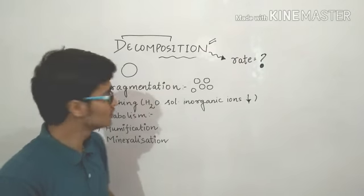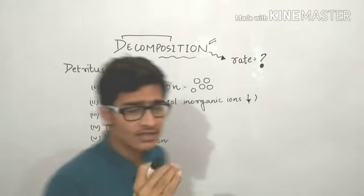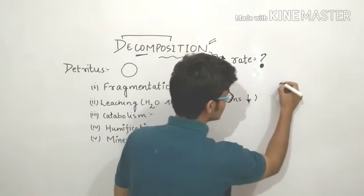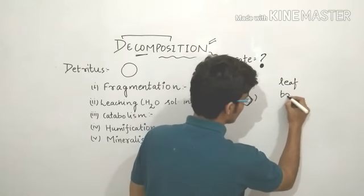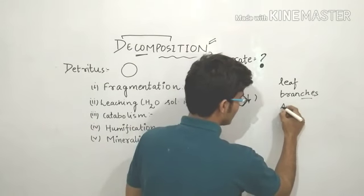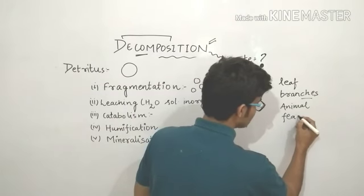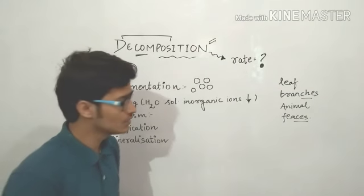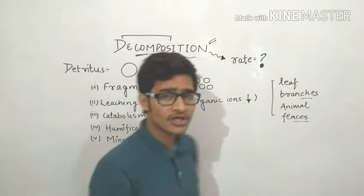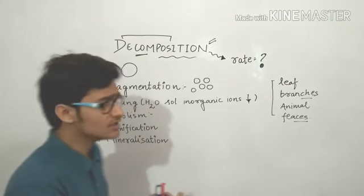The organic substance, that is the dead matter, is a raw material for decomposition. The different parts of dead material can include plant leaves, branches, or any kind of dead plant part. It may also contain animal waste including feces and different kinds of animal waste. So these are the raw materials for decomposition, and all the decomposition processes take place on these.